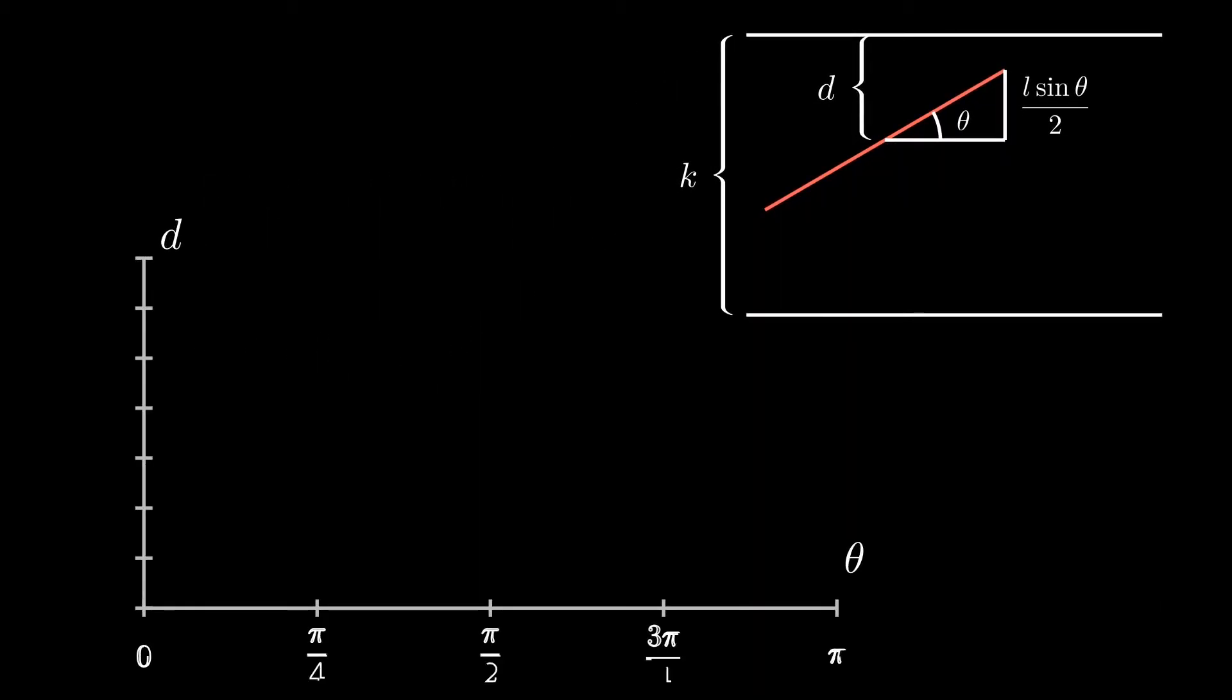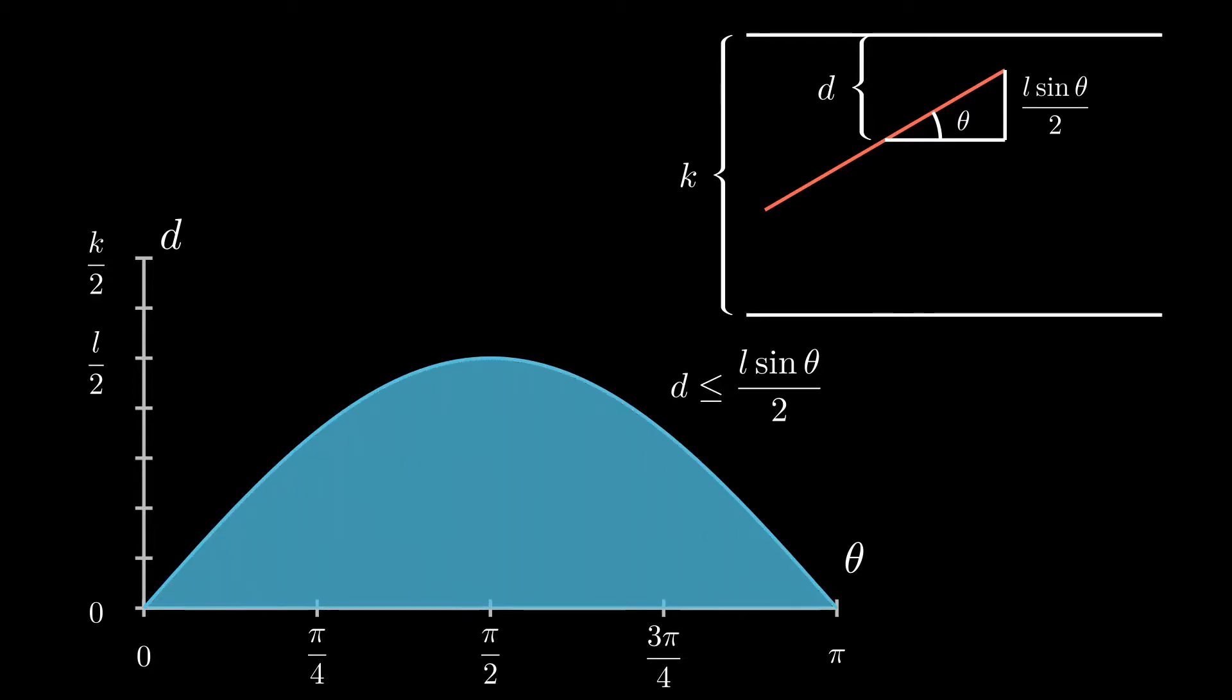Since theta's unique values can range from 0 to pi, we can graph the needle's vertical range as a function of theta. When the needle's vertical range exceeds the distance between the needle's center to the closest line, the needle intersects a line. Thus, everything underneath the curve is a scenario where the needle intersects a line.